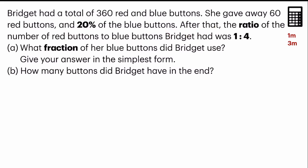After that, the ratio of the number of red buttons to blue buttons Bridget had was 1 to 4. What fraction of her blue buttons did Bridget use? Give your answer in the simplest form. And B, how many buttons did Bridget have in the end? Looking at the questions,